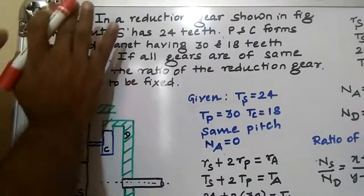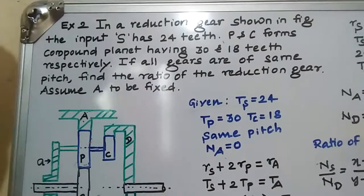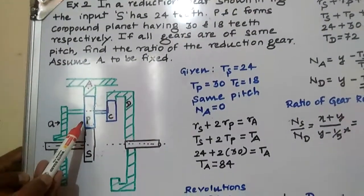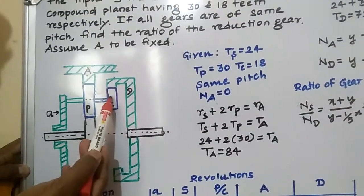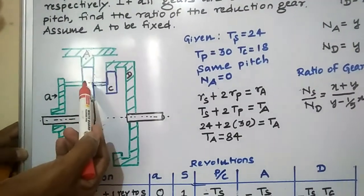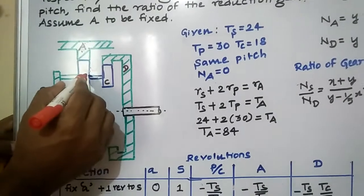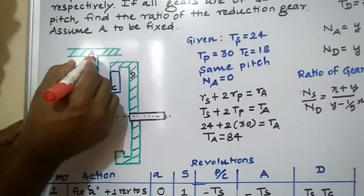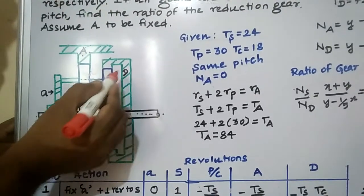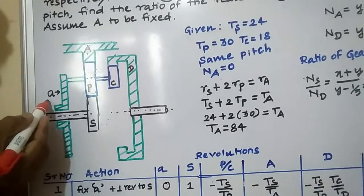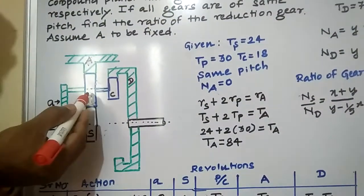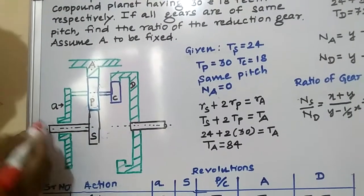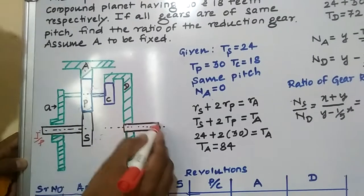They are given in this way. Look at the figure — the input shaft is connected to the sun gear. The sun gear is connected to the planet gear. The planet gear P and C are the compound gear train; both are on the same axis and have the same speed. P is connected to annulus gear A, and C is connected to gear D. The small 'a' is the arm, which is connected to planet gear P. S is the input, directly connected to input. D is connected to output.